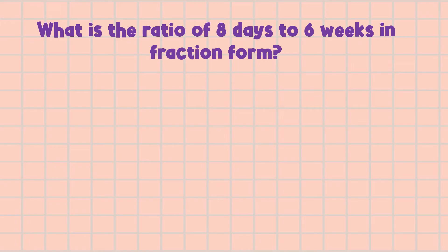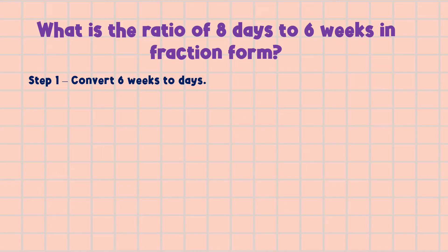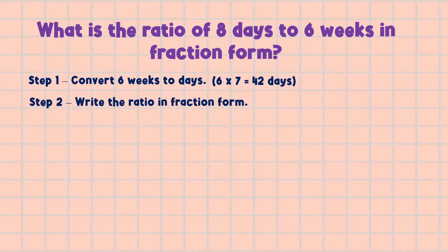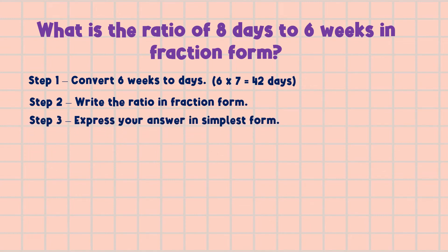Another example: What is the ratio of 8 days to 6 weeks in fraction form? In this example, we have two different units — days and weeks. First, we convert 6 weeks to days. There are 7 days in one week, so 6 times 7 equals 42 days. We need to convert because ratio is the comparison of two or more quantities with the same units. Next, we write the ratio in fraction form: 8 days is to 42 days.